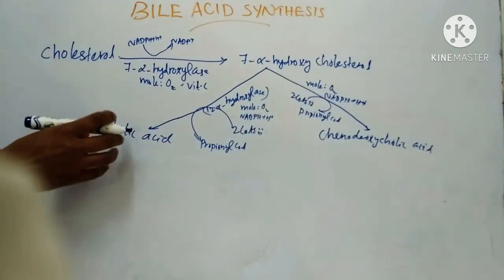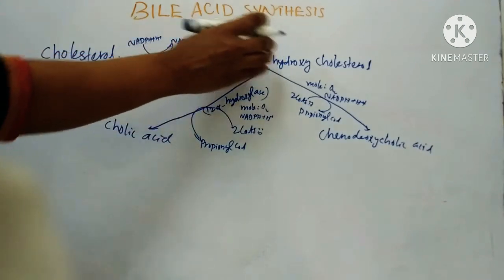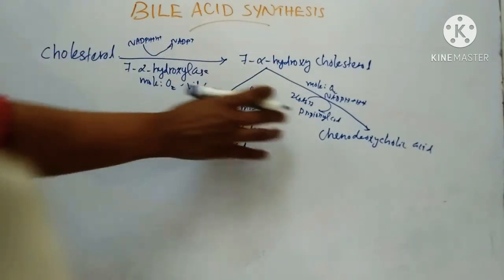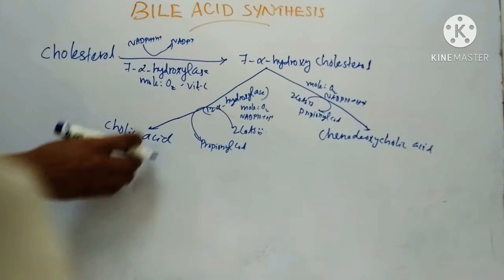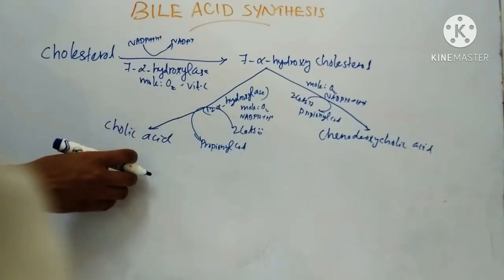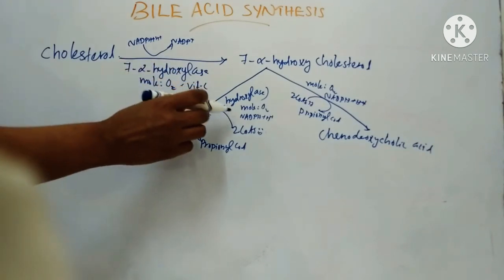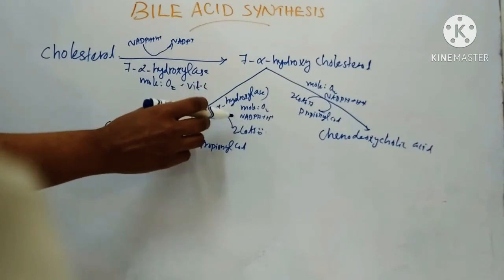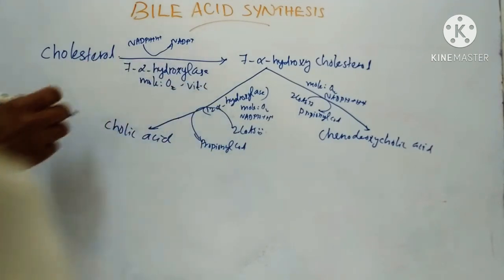This is the second step: the conversion of 7-alpha-hydroxycholesterol to cholic acid and chenodeoxycholic acid by the enzyme 12-alpha-hydroxylase. This reaction also requires molecular oxygen, NADPH, and CoA-SH.